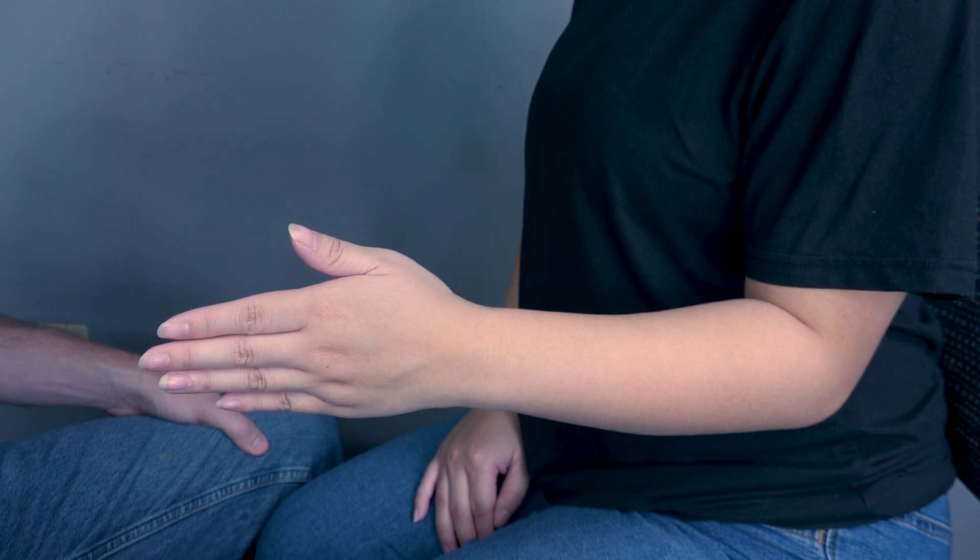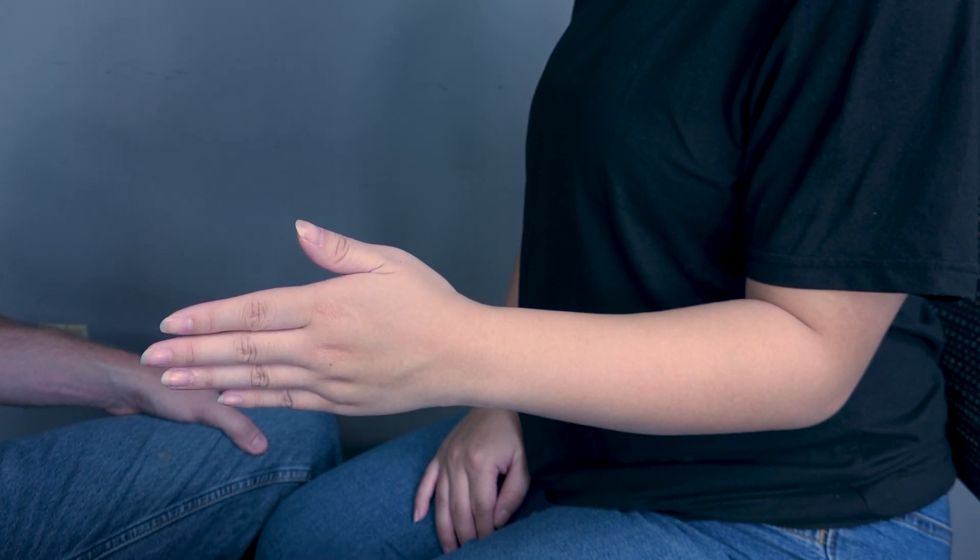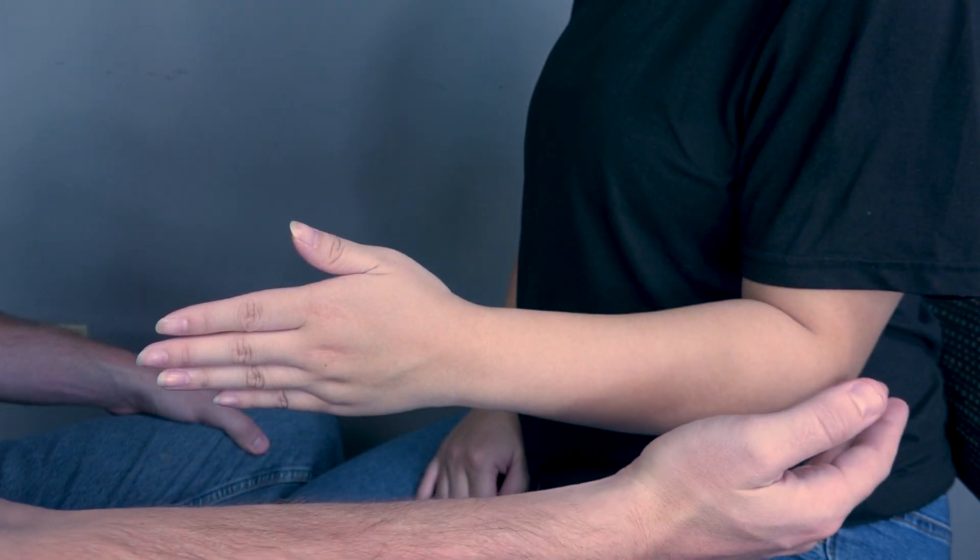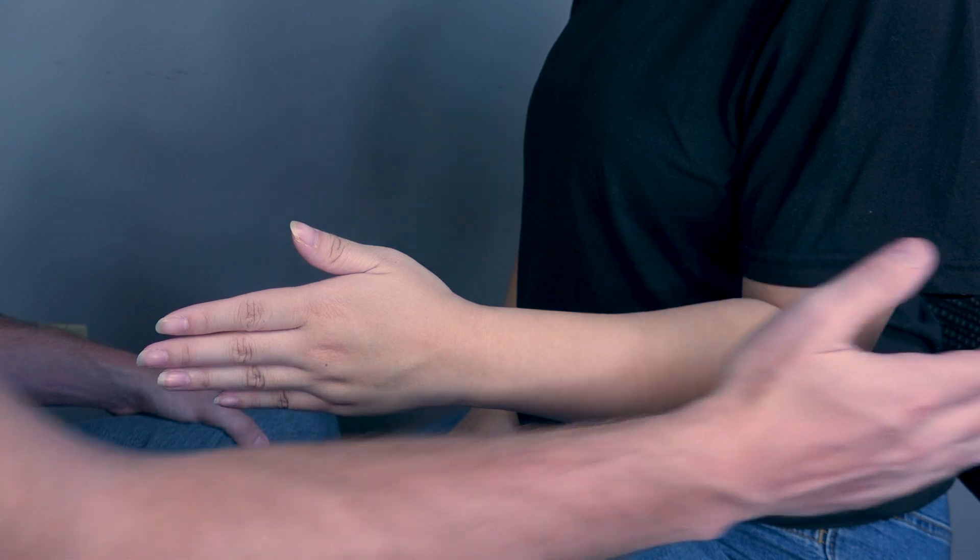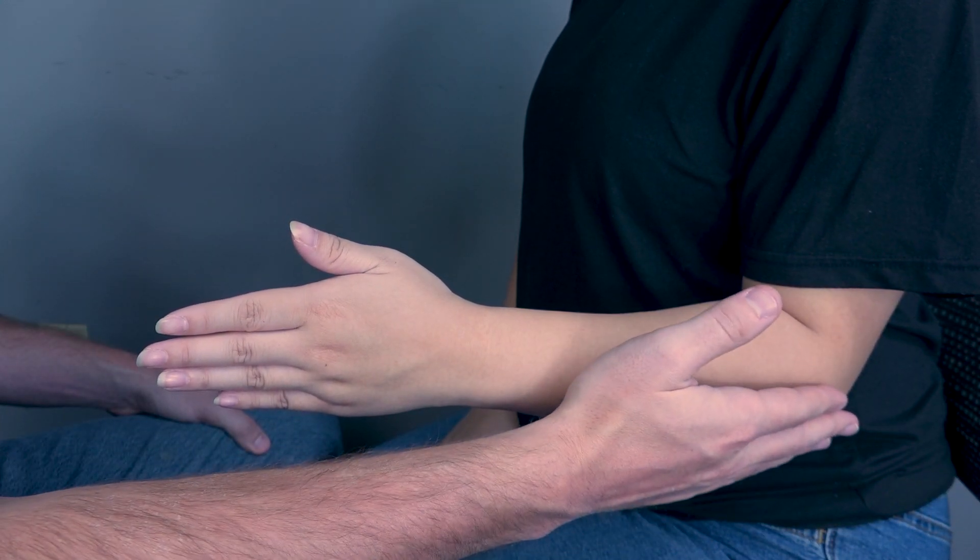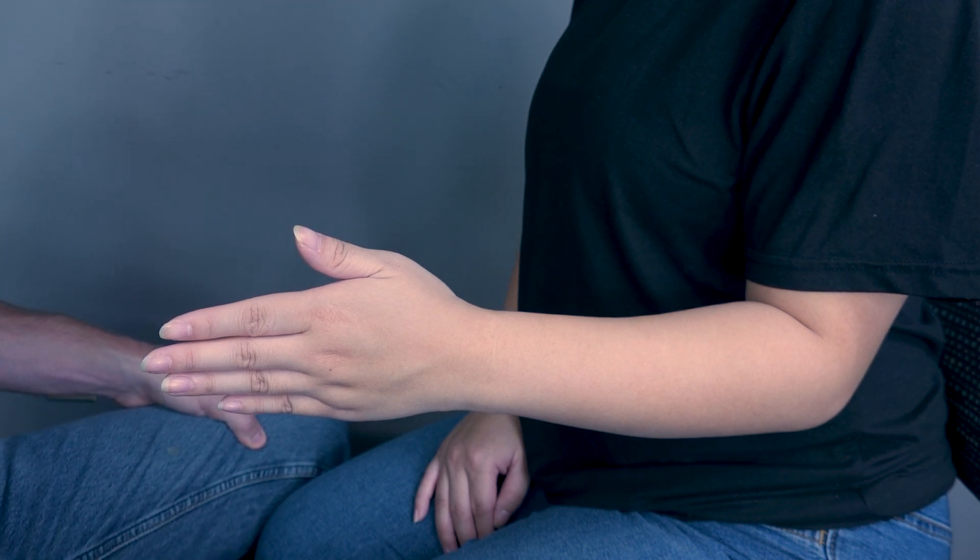Testing forearm pronation and supination in an against-gravity position. Patient will be seated, shoulder neutral, making sure that the elbow is at 90 degrees and tucked by your side. Because if you extend it outward, you will no longer be testing for forearm pronation, so keep that in mind.